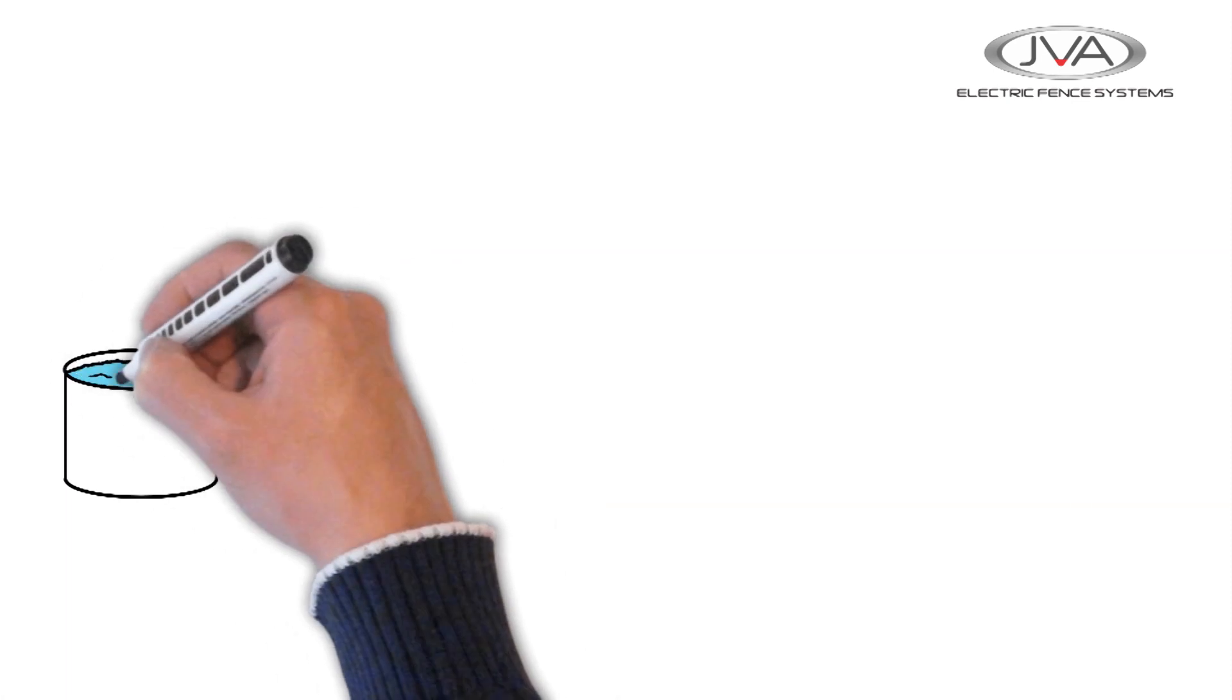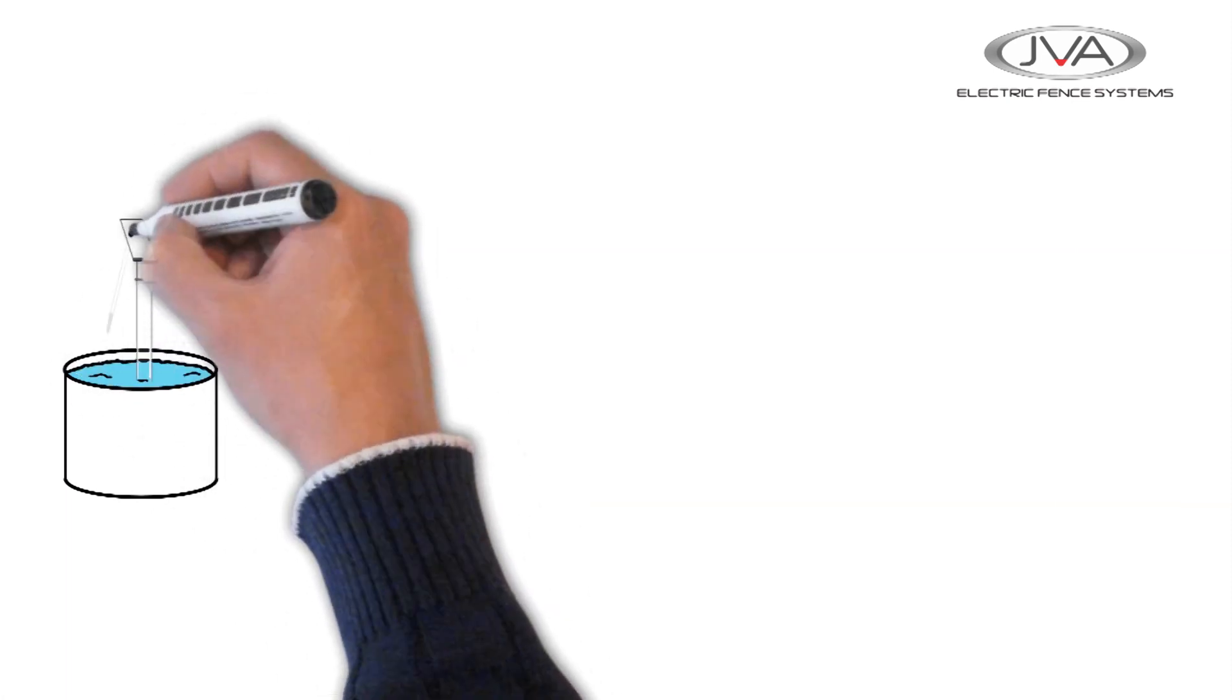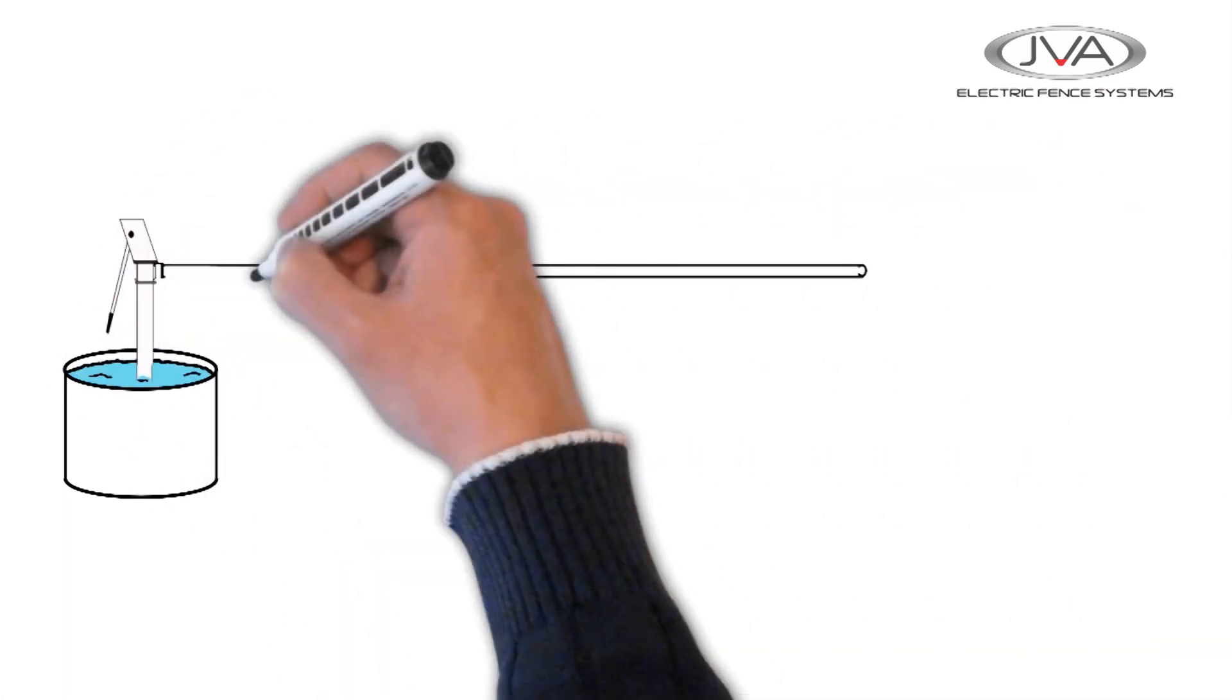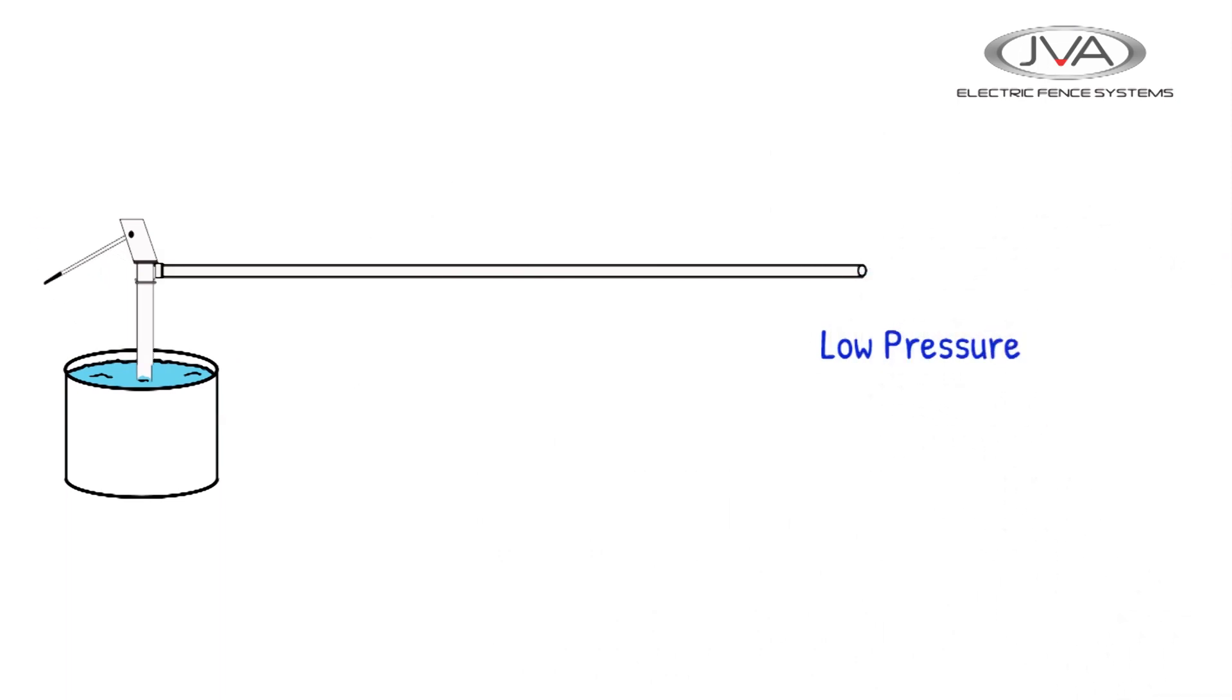In this example, we're going to compare the fence with a water pipe. Here we have a small pump and a long thin pipe that gives a low pressure flow of water.